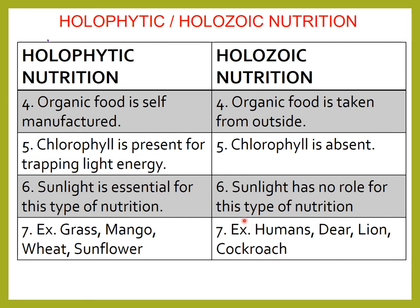In holophytic nutrition, organic food is self-manufactured. They manufacture their own food — that is carbohydrate, simple carbohydrate, that is sugar. In holozoic nutrition, organic food is taken from outside. They don't manufacture their own food; they take the food from outside.